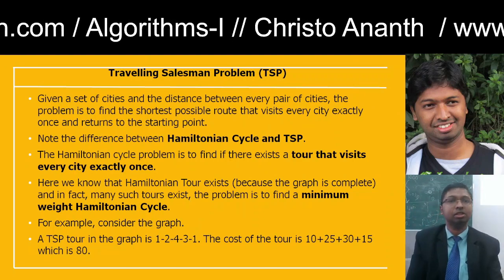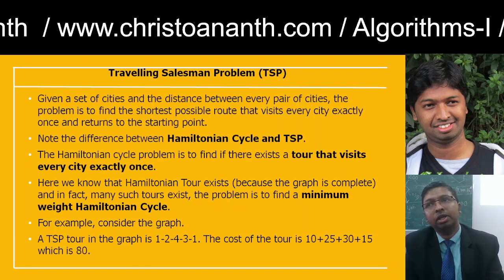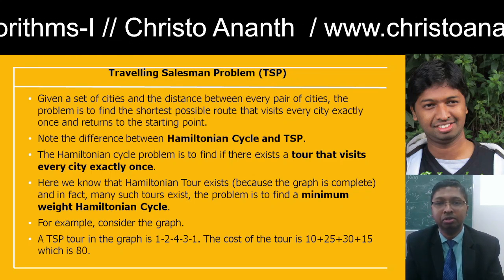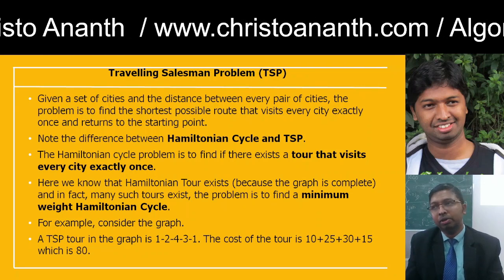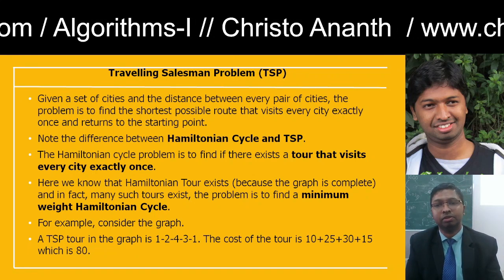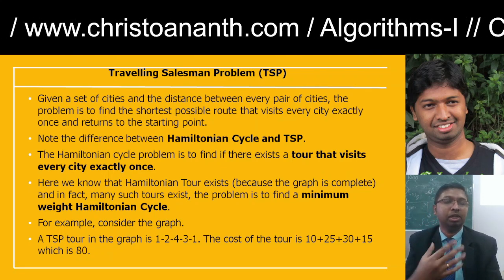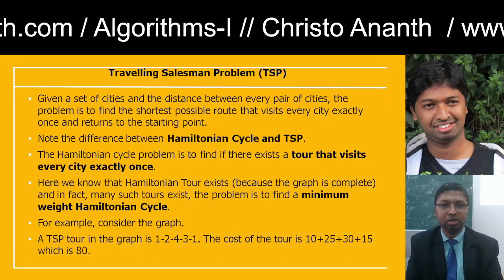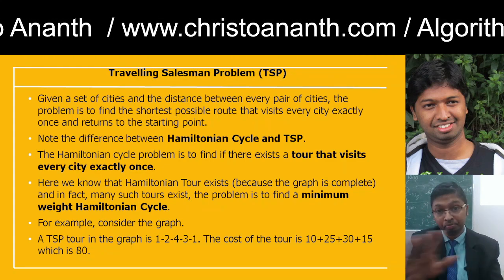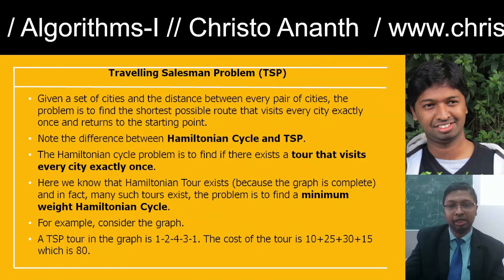We have a set of cities and we need to find the distance between them. The problem is to find the shortest possible route that visits every city exactly once and returns to the starting point. We'll stress the significance of TSP in relation to the Hamiltonian cycle. Comparing with the Hamiltonian cycle, there will be a tour visiting every city exactly once. The Hamiltonian tour exists because the graph is complete.